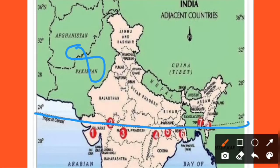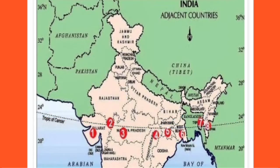Total 8 states are passed by the Tropic of Cancer: Gujarat, Rajasthan, Madhya Pradesh, Chhattisgarh, Jharkhand, West Bengal, Tripura, and Mizoram. So these are the 8 states through which the Tropic of Cancer passes.